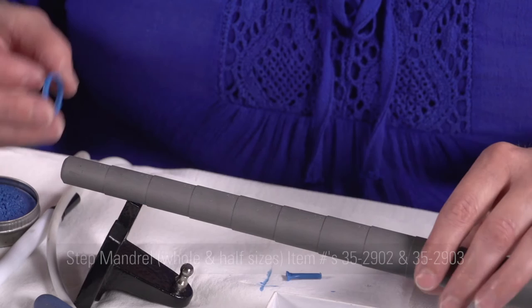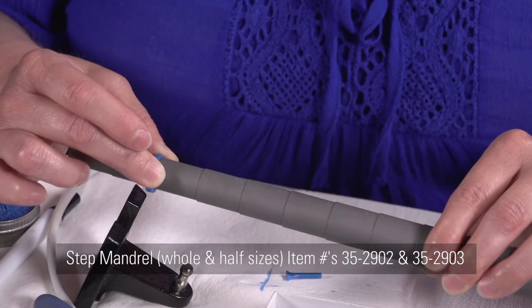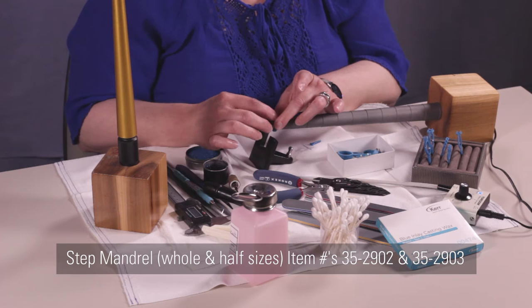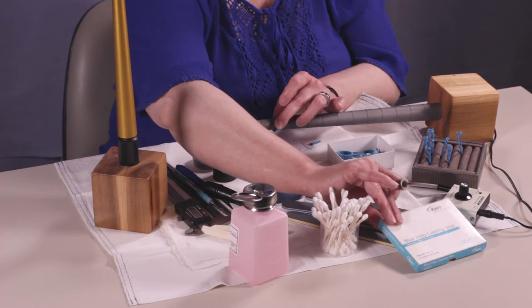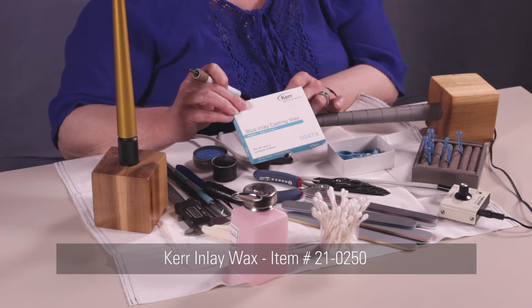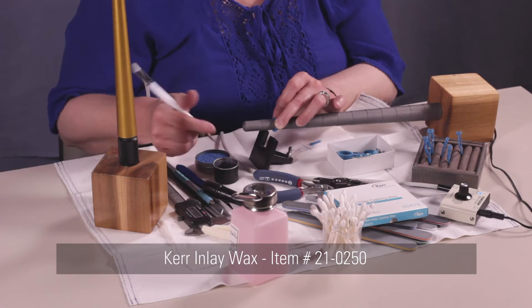Now we're going to put it on our ring sizer. This is a step mandrel. You can use whatever it is that you have. We're going to weld this part together. We use a blue inlay wax for this purpose, or you can use an injection wax that's the same wax of your injection piece. I kind of like to use the same wax, but a lot of people use the blue inlay wax.